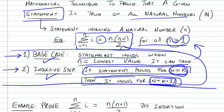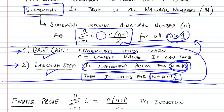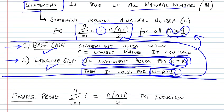So we've divided our proof problem into two sub-problems, and by proving both cases, we've proved the general case.